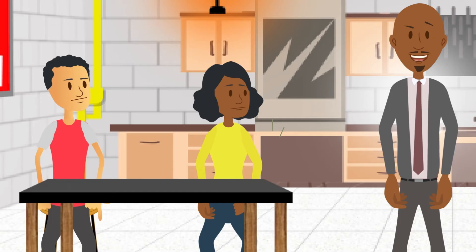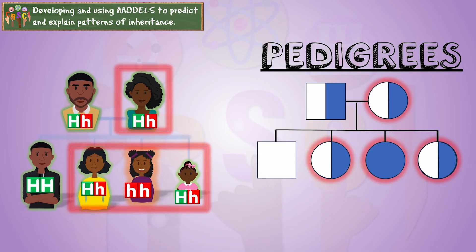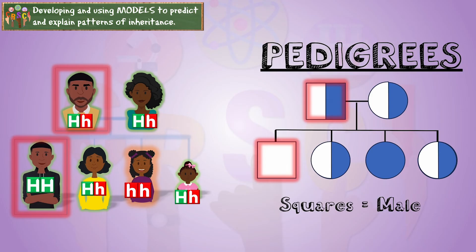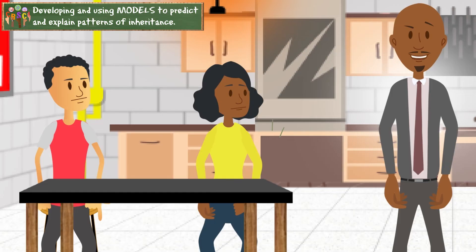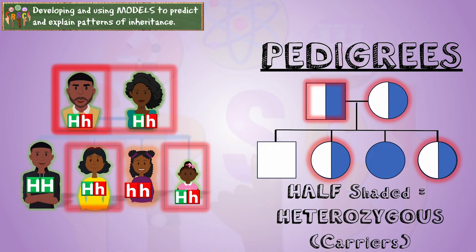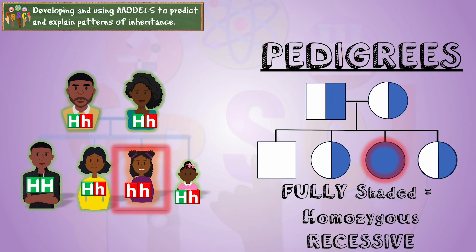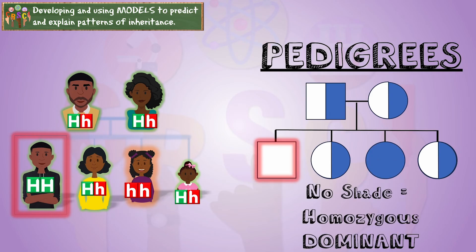There are multiple questions I could ask about this, but here's an easier way to represent it — it's called a pedigree. The circles represent female organisms and the squares represent male organisms. This applies to more than just humans. Half-shaded represents carriers — heterozygous genotypes — fully shaded is homozygous recessive, and no shade is homozygous dominant.